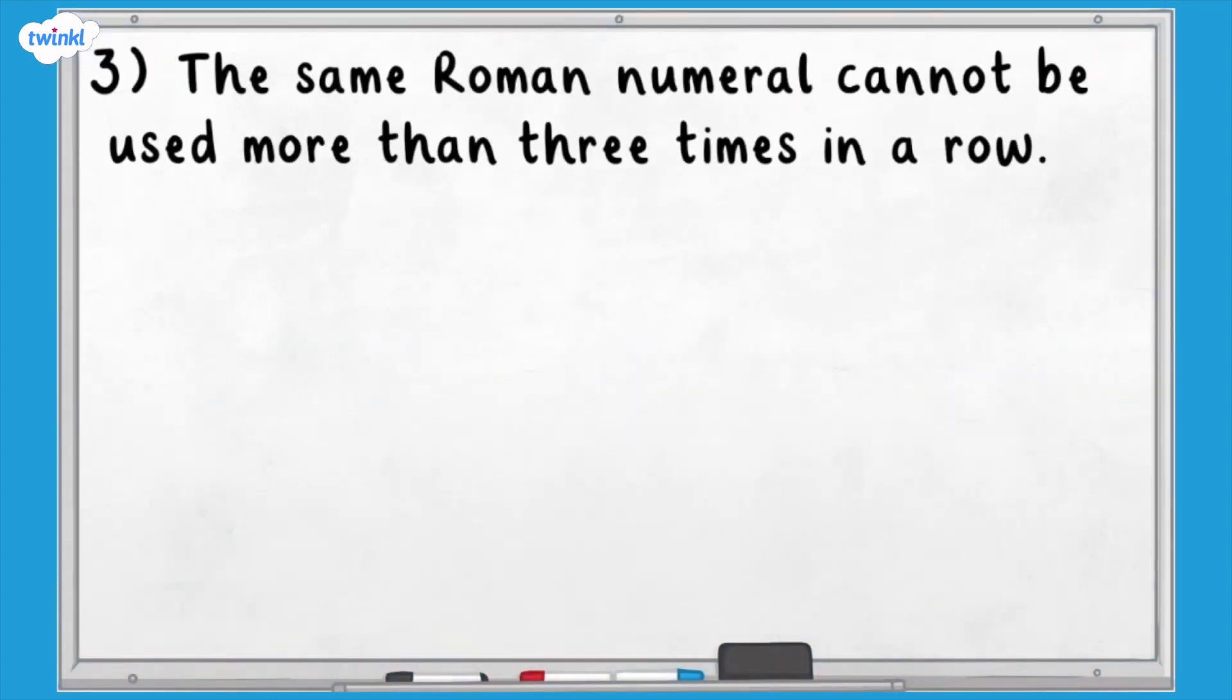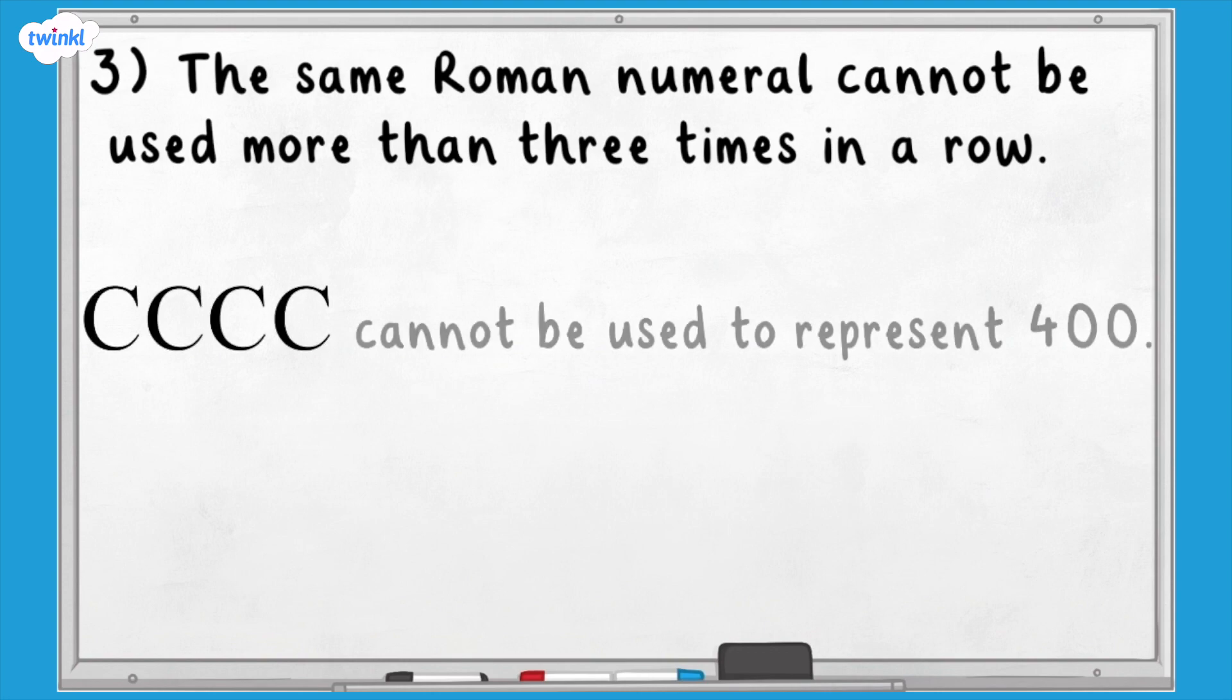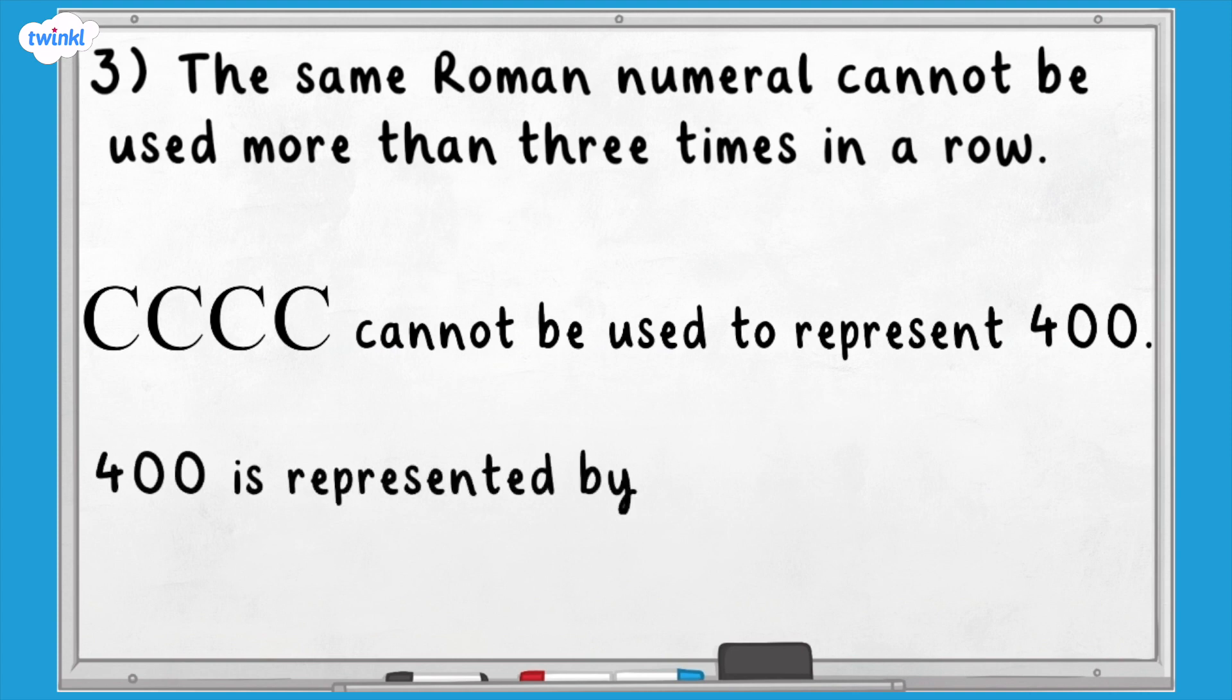Now it's time to take a look at our final rule. The final rule is that the same Roman numeral cannot be used more than three times in a row. CCCC cannot be used to represent 400. We need to instead represent it as 500 subtract 100 or CD.